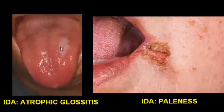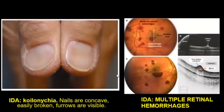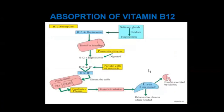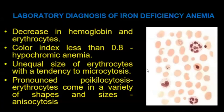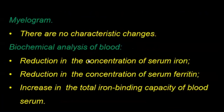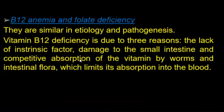Symptoms of iron deficiency anemia include atrophic glossitis (inflammation of the mucous membrane of the tongue) and koilonychia. Absorption of vitamin B12 is also very important. Laboratory diagnosis of iron deficiency anemia: decreased hemoglobin and erythrocytes, color index less than 0.8, hypochromic anemia.